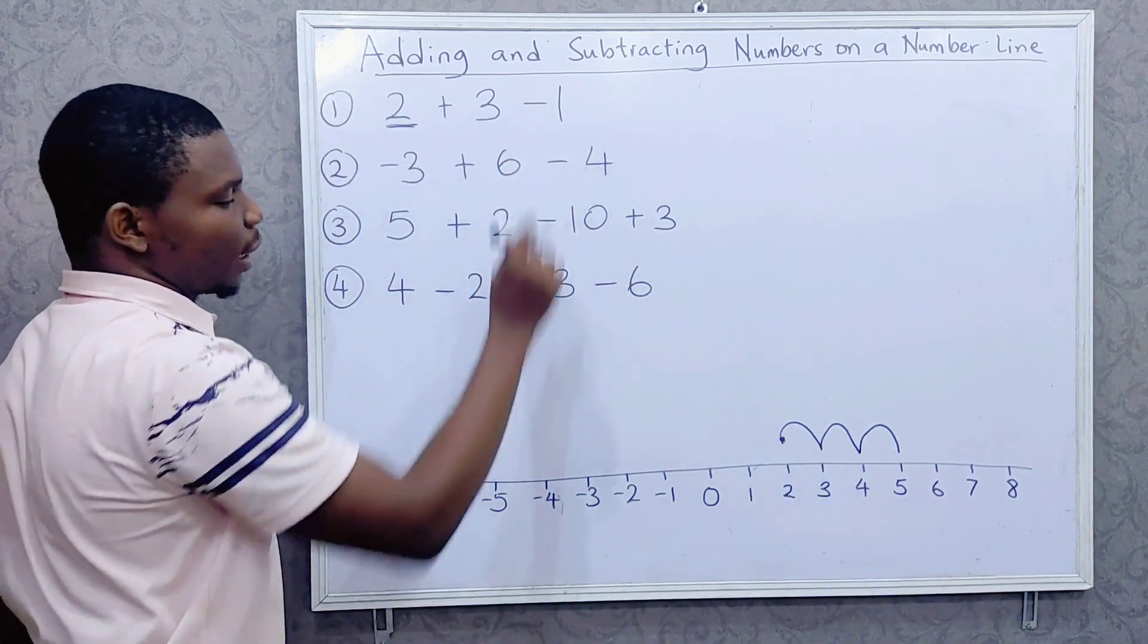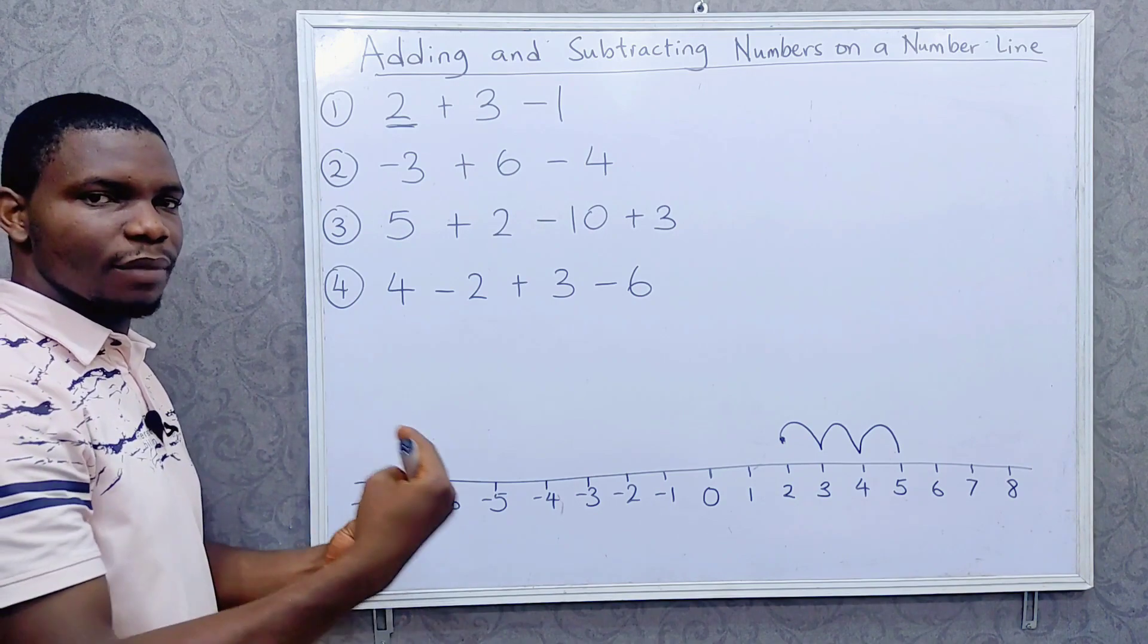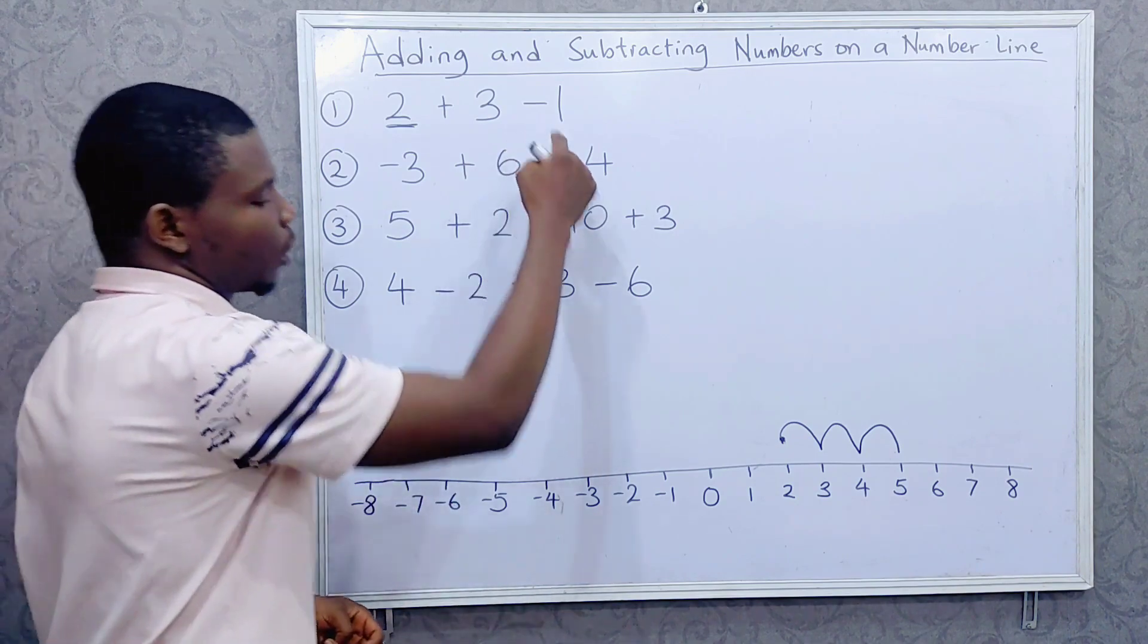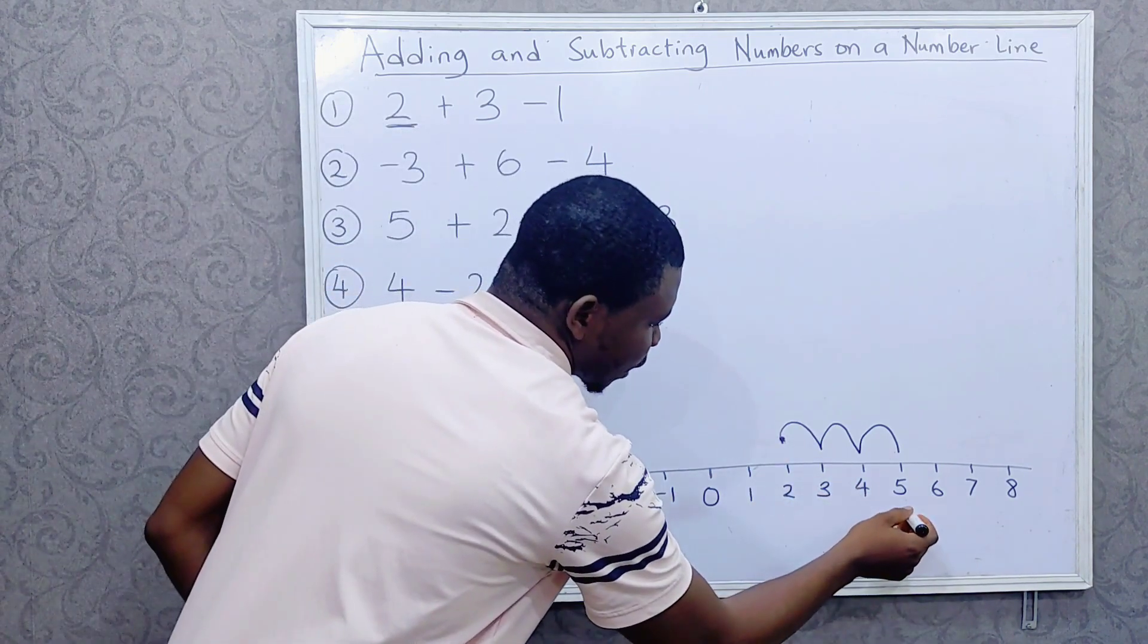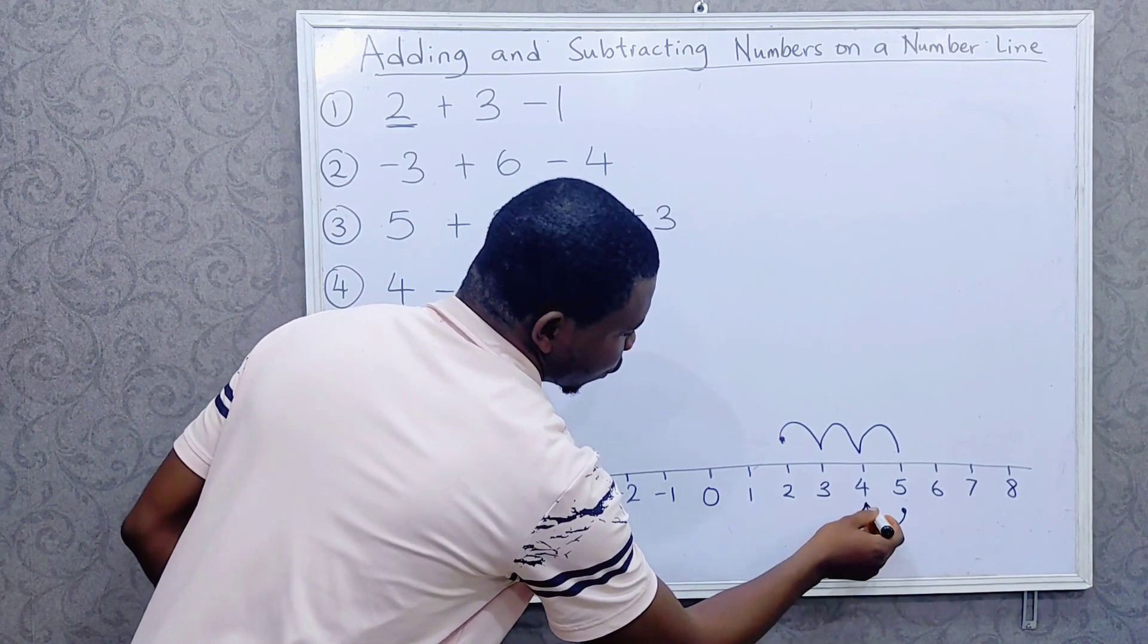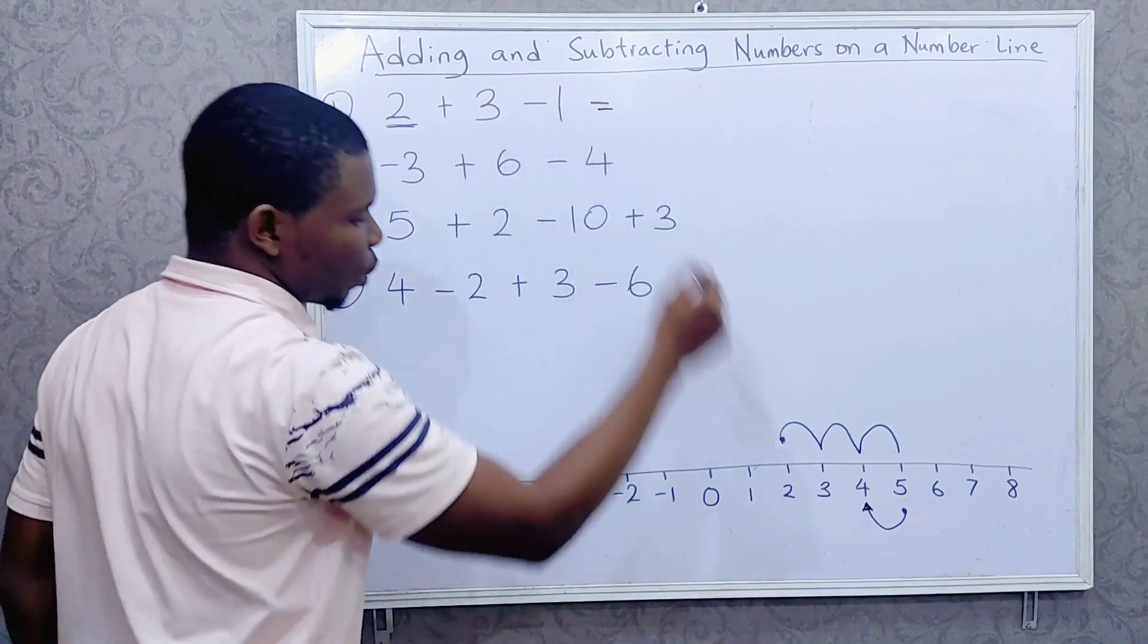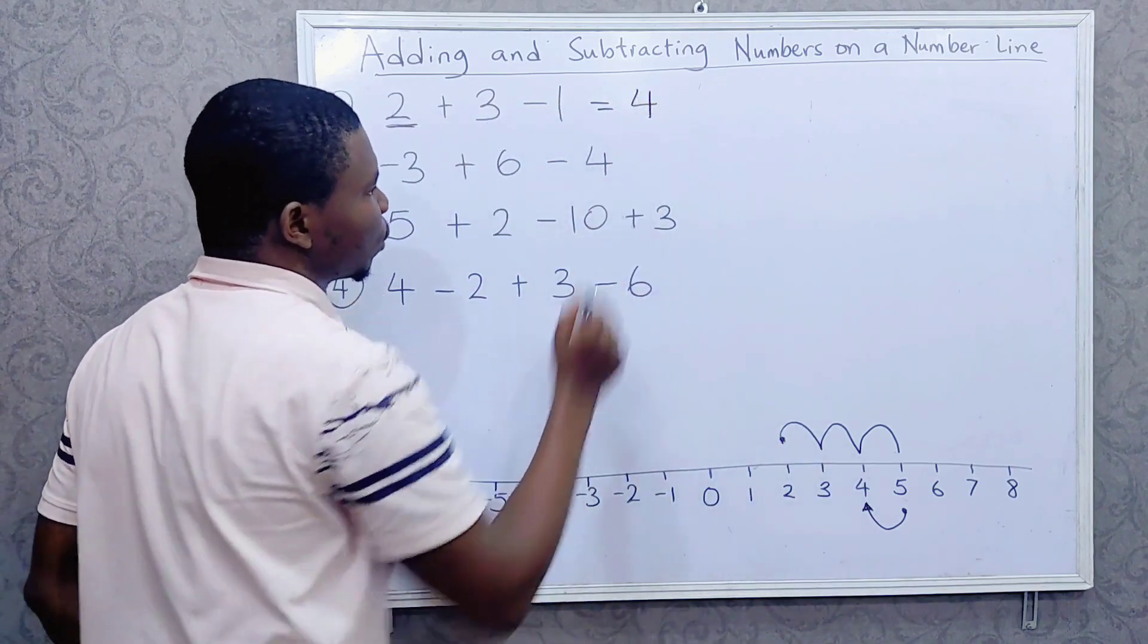Then minus 1, we go backward. Minus means you are going backward once. So we go backward once from 5. So it means that 2 plus 3 minus 1 is equal to 4. Good, let's do the next one.